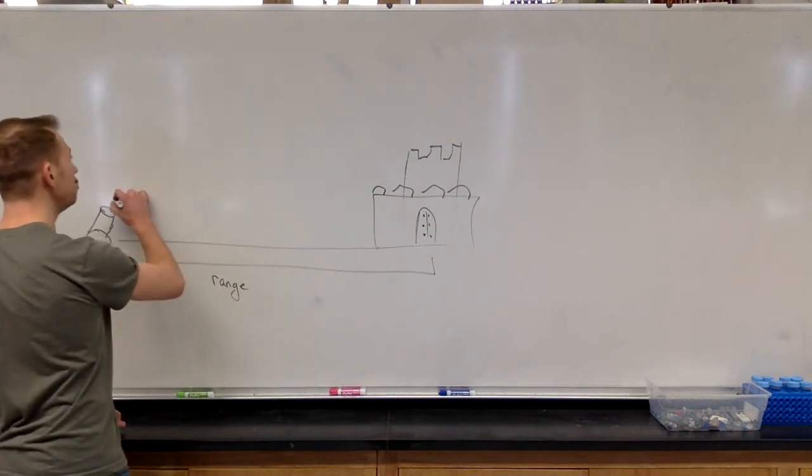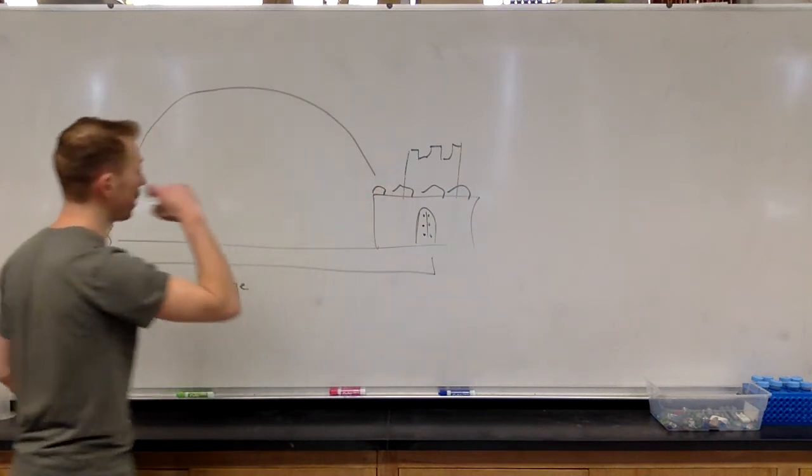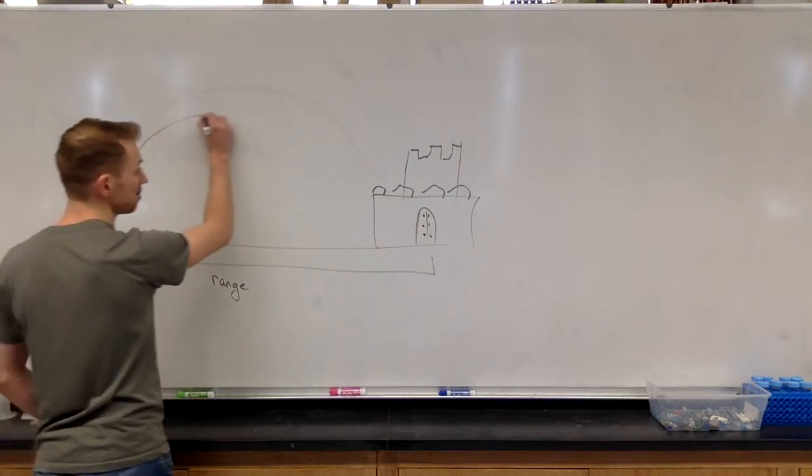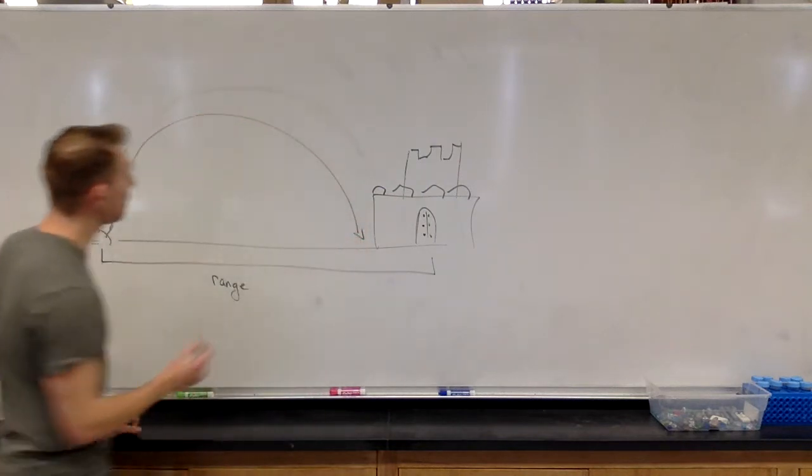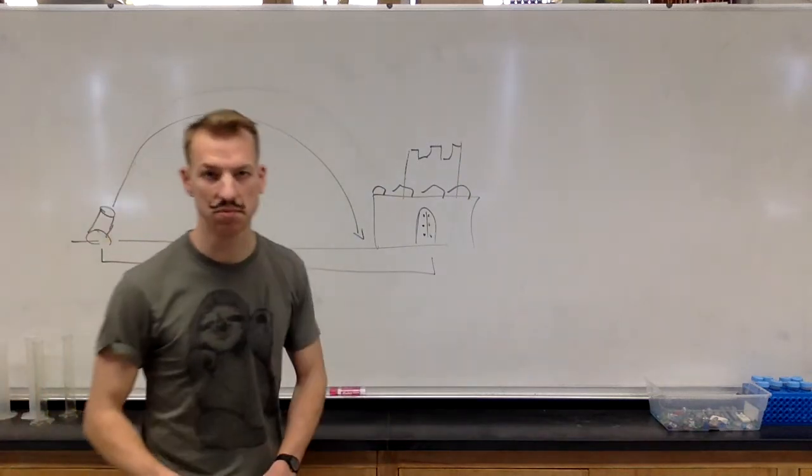The projectile will move in that parabolic arc, except instead of going straight downward, it will go outward first. And let's assume that the projectile doesn't actually hit the castle, because that will also mess up our math. But it will make a parabolic arc, just like we saw with the projectiles before.